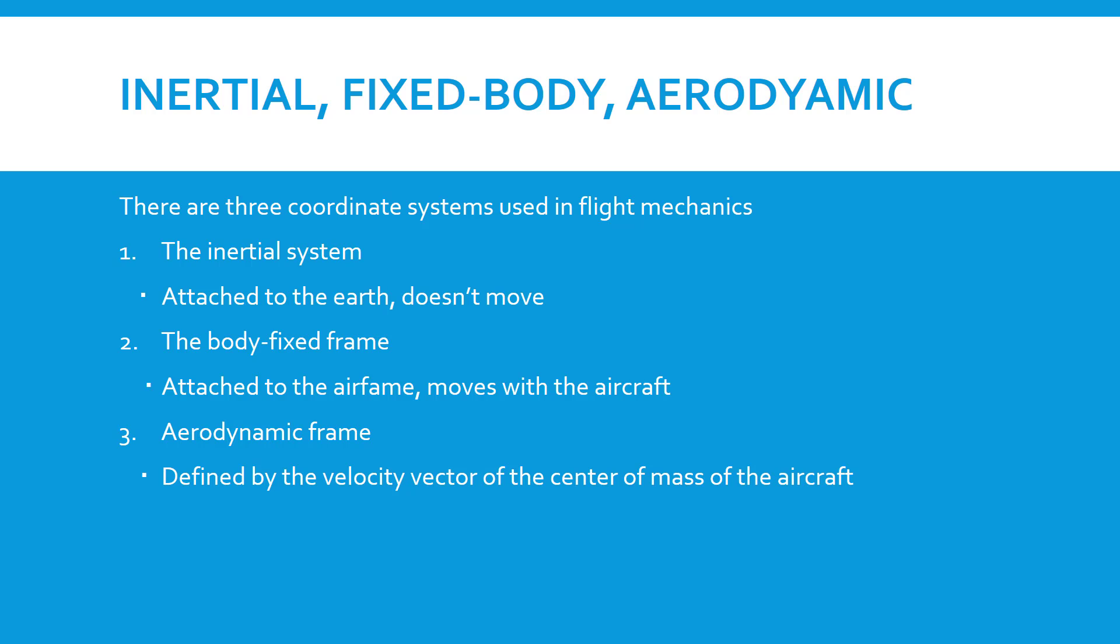There are three systems primarily used in flight mechanics: the inertial system, which is attached to the earth and does not move; the body-fixed frame, which is attached to the airframe and moves with the aircraft; and the aerodynamic frame, which is defined by the velocity vector of the center of mass of the aircraft. The aerodynamic frame is also fixed to the aircraft.